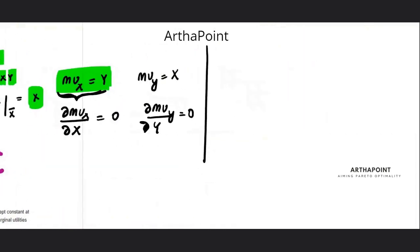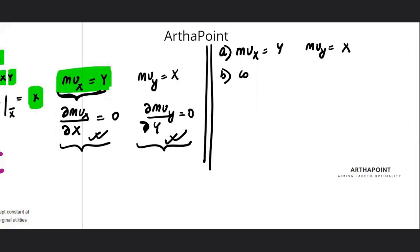So please note, what are we concluding? We are concluding that A, marginal utility of X is Y, marginal utility of Y is X. B, marginal utilities are constant. They don't change as X changes or Y changes. So we have constant marginal utility.